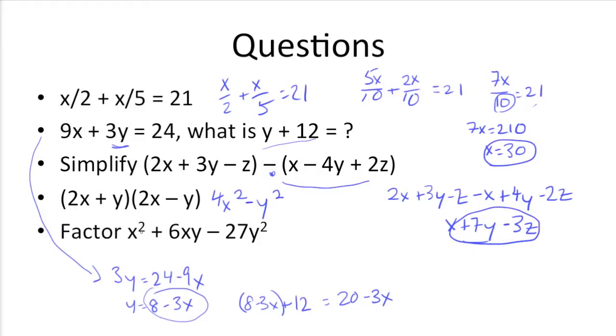So last up, we have factor x² + 6xy - 27y². So what we need to do to factor this is to look at the coefficients of the first and last terms, which are 1 and -27.